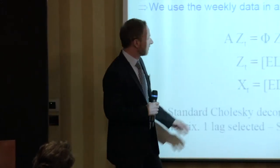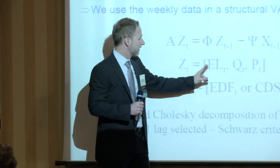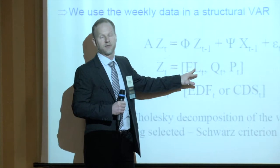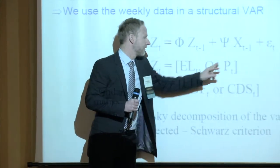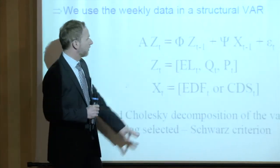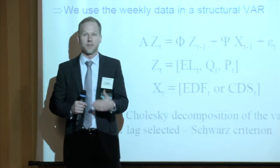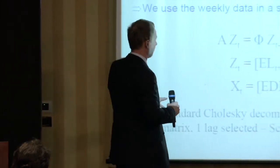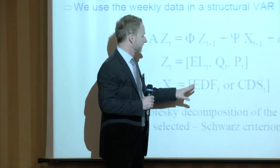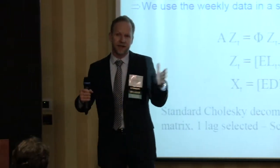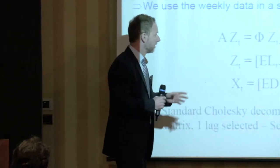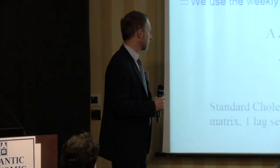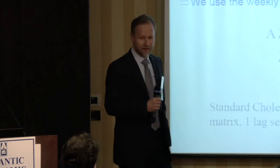It's a three-variable VAR where the ordering has excess liquidity first — because from that week's point of view it is exogenous — then trading in the market, and then a control for bank risk, because bank risk matters for prices and quantities. We try a couple of different measures: EDFs at the country level, or bank CDSs aggregated at the country level, similar to what Sascha is doing. One lag seems to be fine.